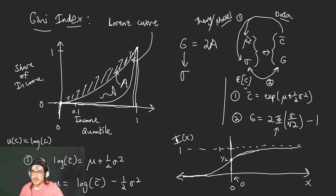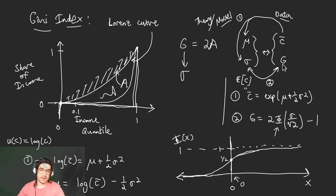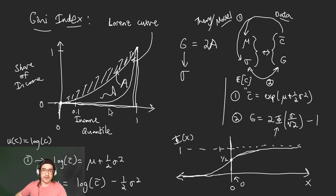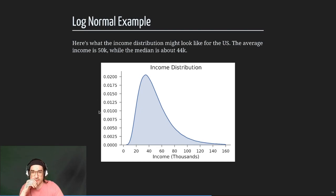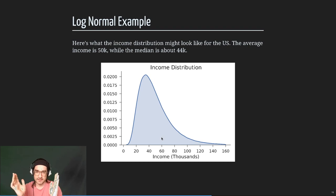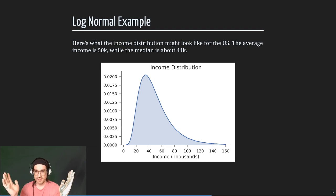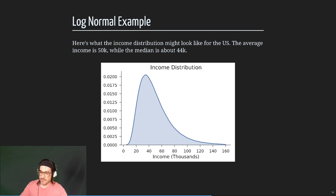The mu and sigma define the distribution. Mu tells you where the distribution is anchored — for instance, the median income for individuals is $38,000. Sigma tells you how wide the distribution is. If sigma is close to zero, the distribution is just like everyone makes around $38,000–$39,000 a year. As sigma gets larger, you get a more realistic distribution, and there's no upper limit for sigma. So that mapping creates mu and sigma from the data.